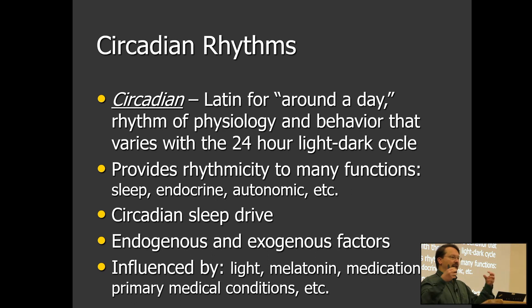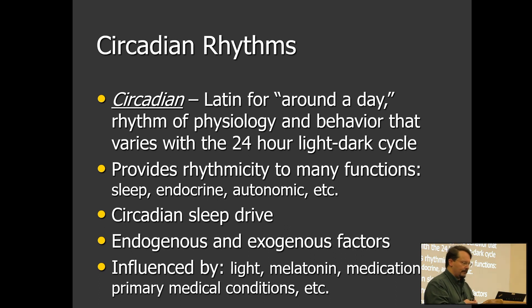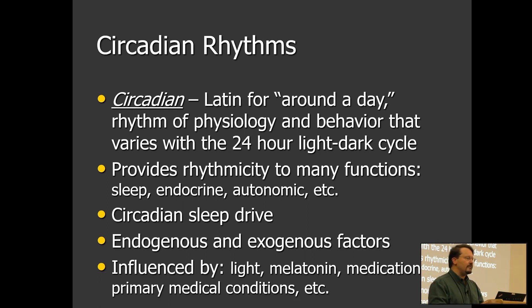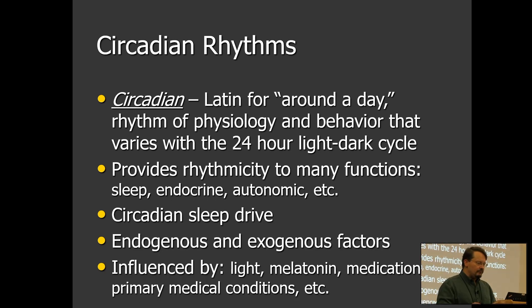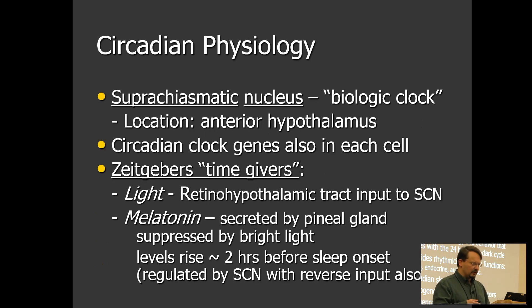We need that external input to help keep our rhythm regulated. It provides this 24-hour rhythm to many different factors, including our sleep-wake cycle, core body temperature, various endocrine functions with hormone releases, and feeding behaviors. The two primary things that affect our circadian rhythm are light and melatonin.